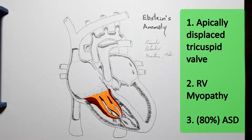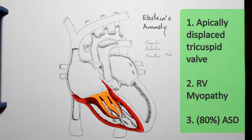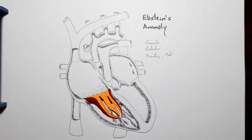The reason we focus primarily on the tricuspid valve is because Ebstein anomaly has a huge variation in anatomy and severity between patients. Histologically, it's a cardiomyopathy of the right ventricle, and since the tricuspid valve develops from the right ventricle, we present with the displaced tricuspid valve.